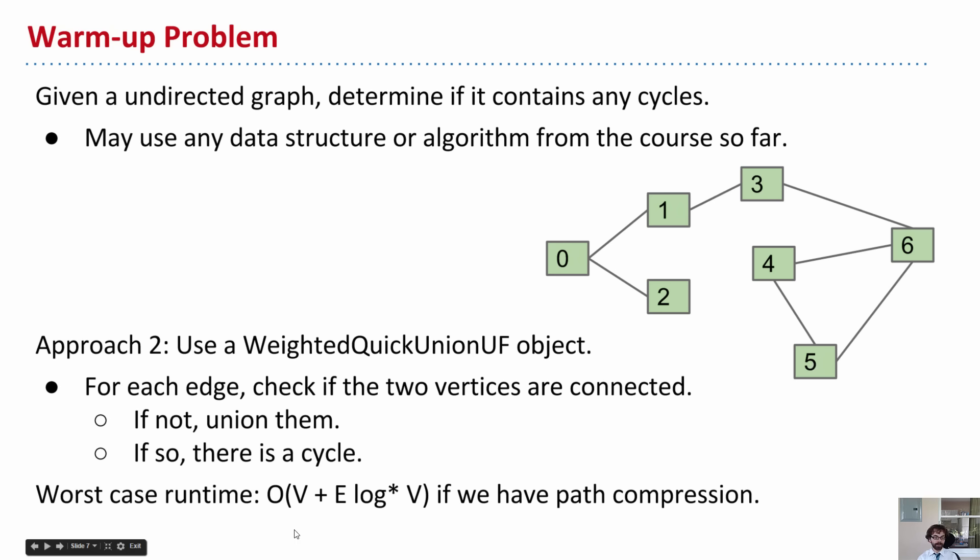Now, this algorithm has runtime V plus E log star V, as long as we use path compression. And that's big O in this case, as opposed to big theta. And why is it this? Well, go back and look at lecture 20. We said that the runtime of weighted quick union with path compression was n plus m log star n, where n is the number of items and m is the number of operations. Here, we did that same thing. There's V items and E operations. So this is our runtime.